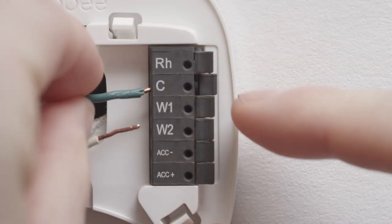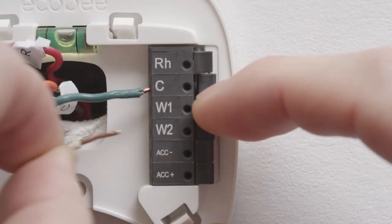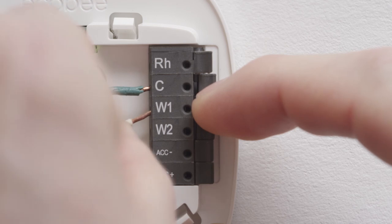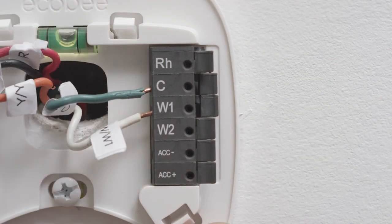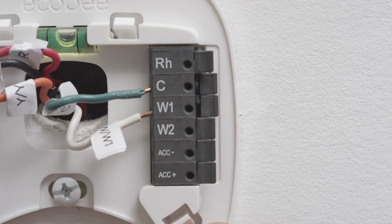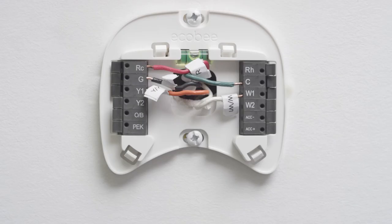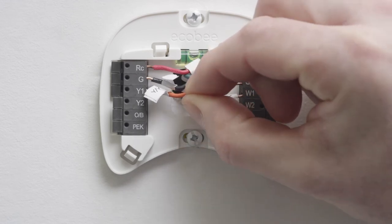When the wires are inserted correctly, the levers will lower. If you inserted a wire into the wrong terminal, simply push down on the lever and pull on the wire gently to release it. Gently tug on the wires to make sure they're installed correctly.